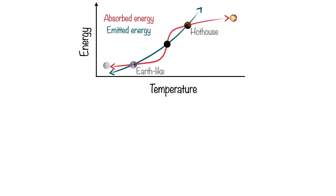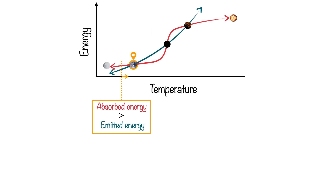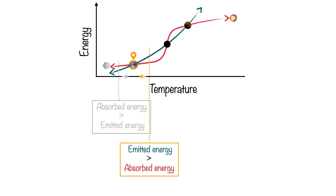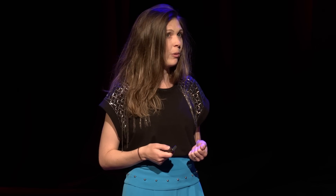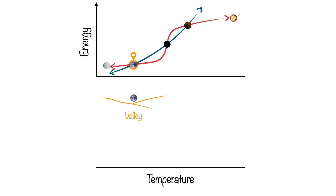To start looking at that, we explore what would happen when the temperature changes slightly and how it would respond. Decreasing the temperature a little bit, the absorbed energy would be greater than the emitted energy because the red line is above the blue line. This means more energy would be coming into the system and so the temperature would increase. If, on the other hand, we increase the temperature slightly, now the emitted energy is greater than the absorbed energy, which would drive the temperature lower. For this reason, the Earth-like state is currently in a stable state because when we give it a nudge, it will be pulled back to where it was before — like a ball in a valley. When it's pushed, it comes back, and for this reason it's also called an attractor.